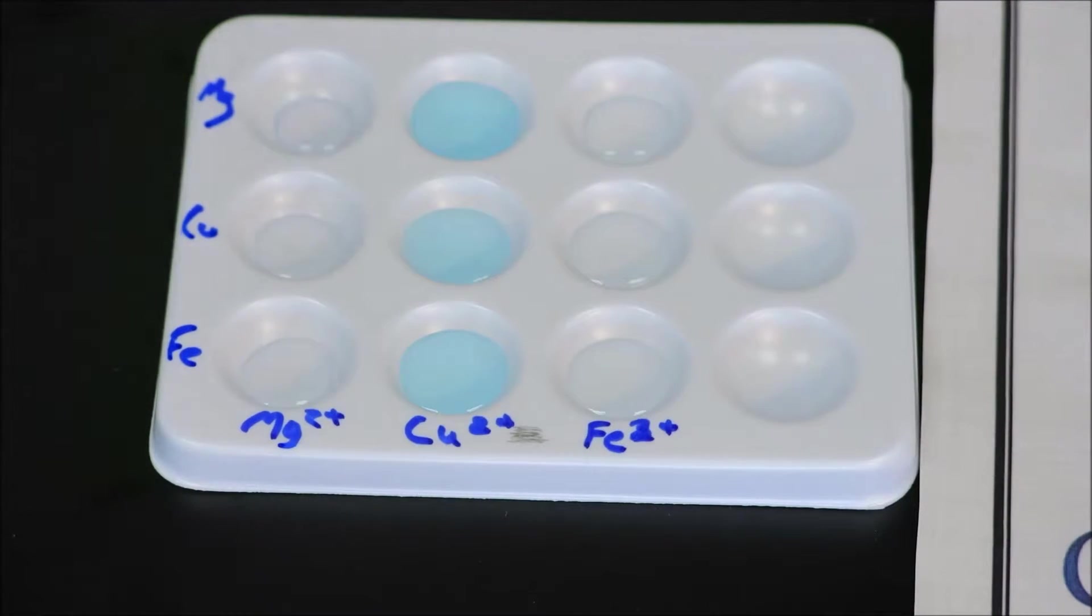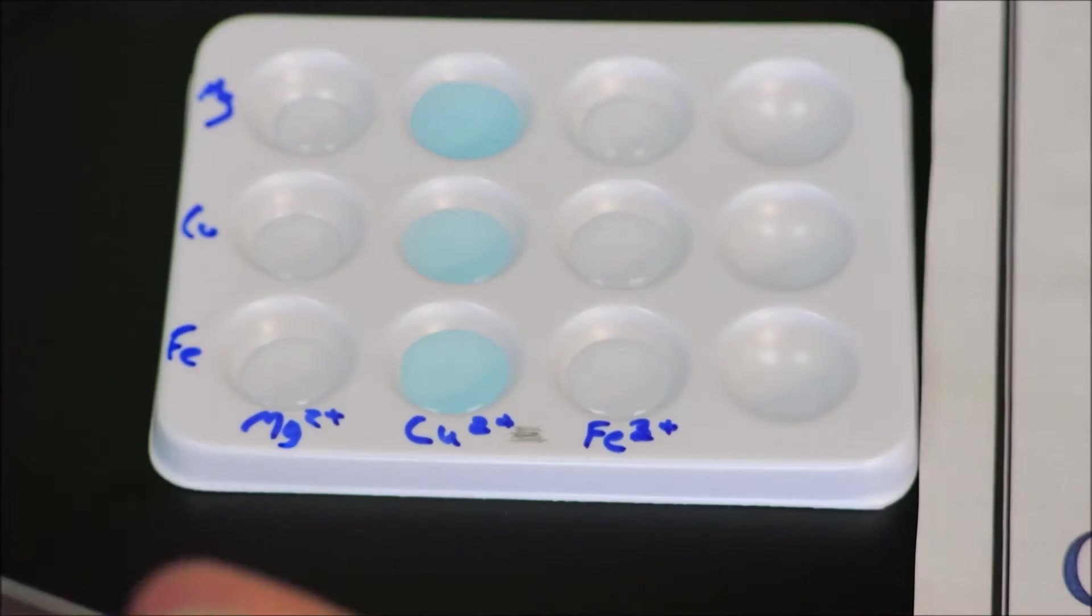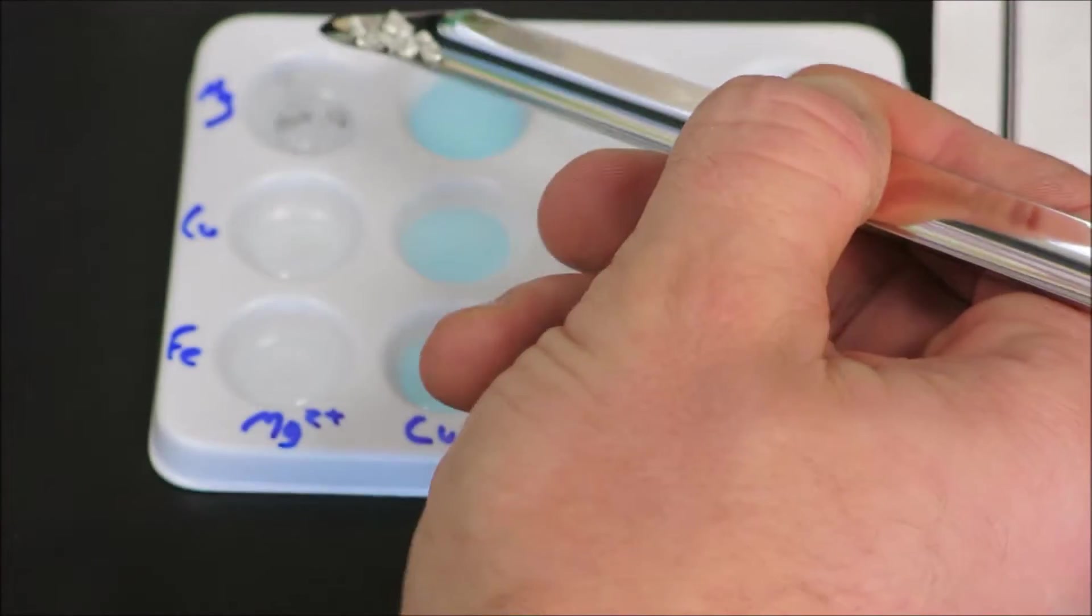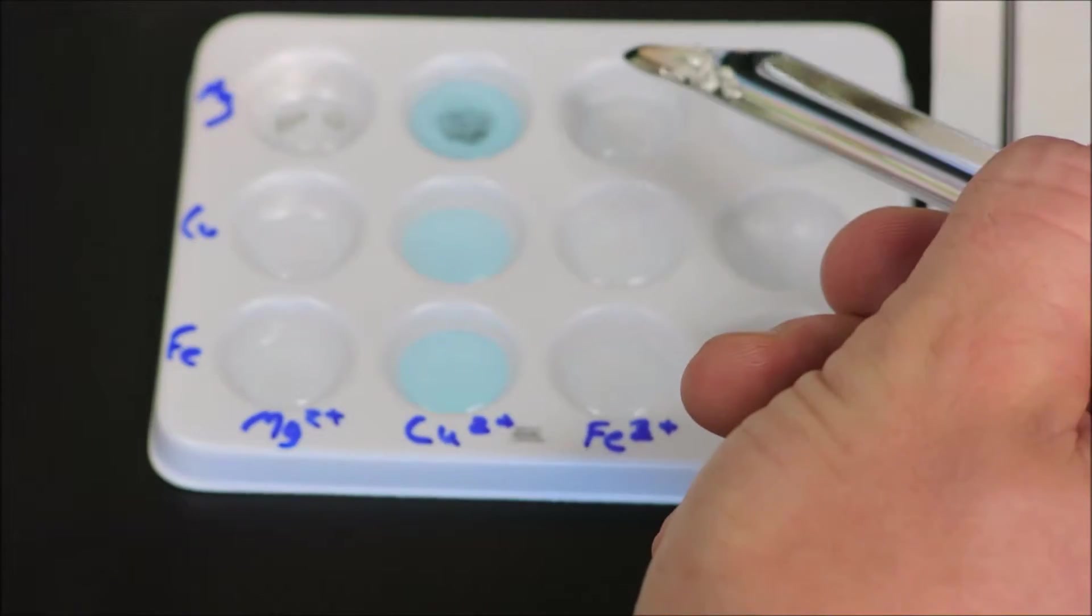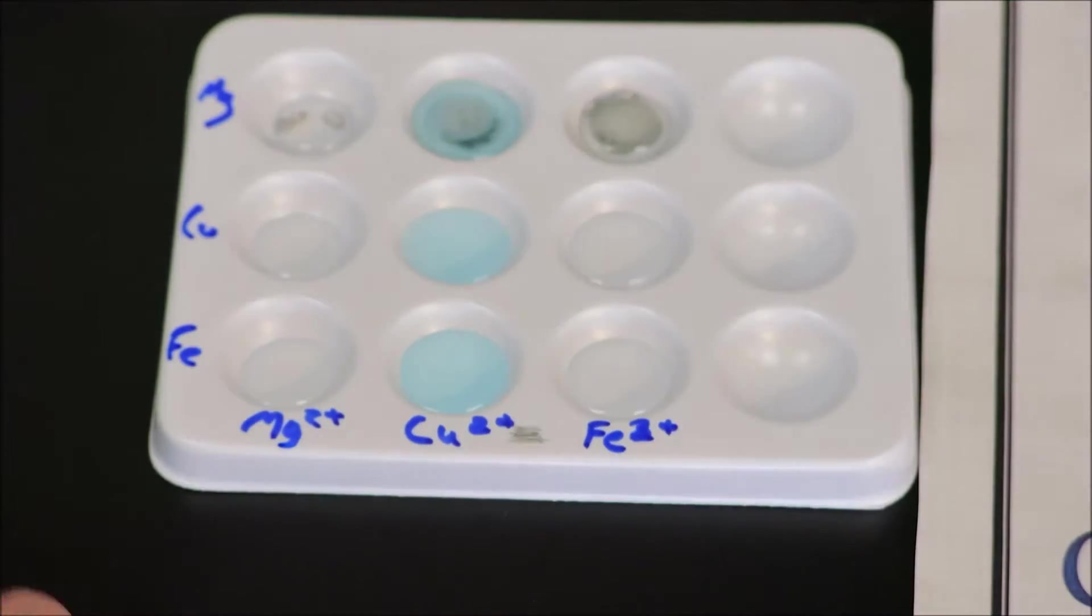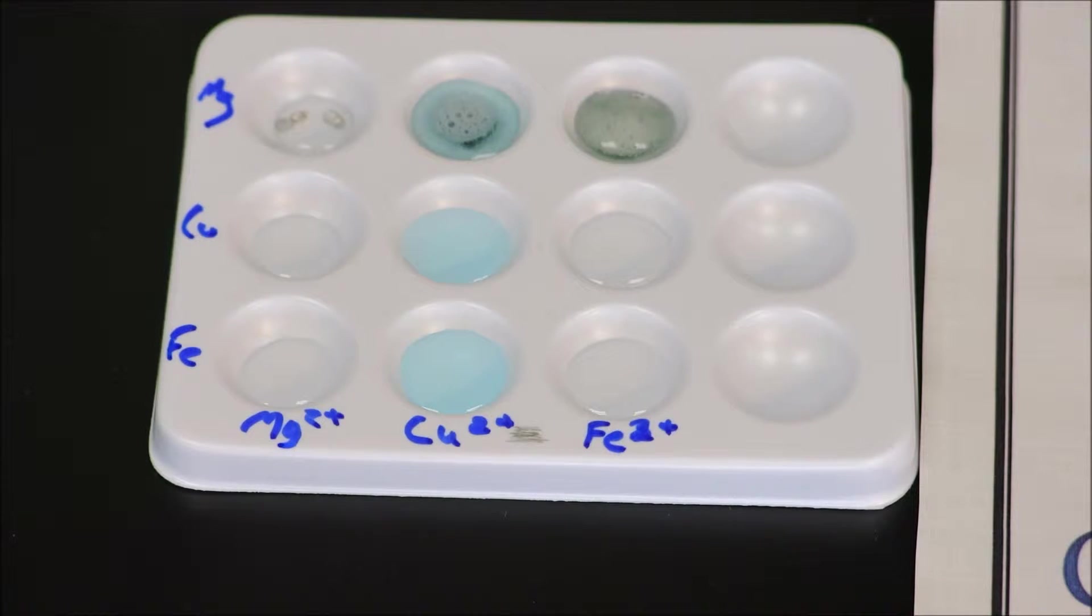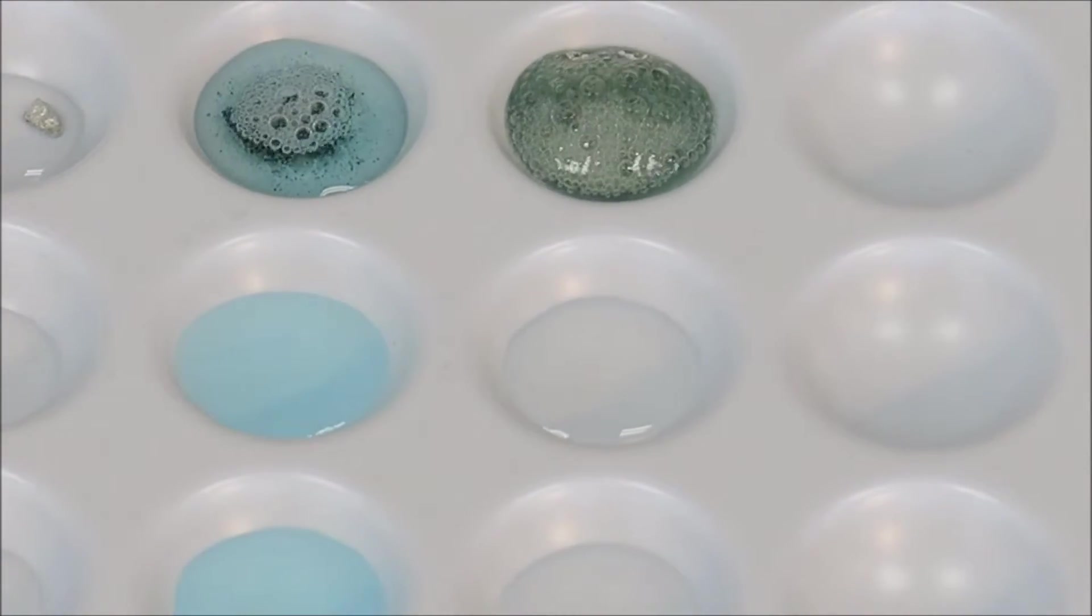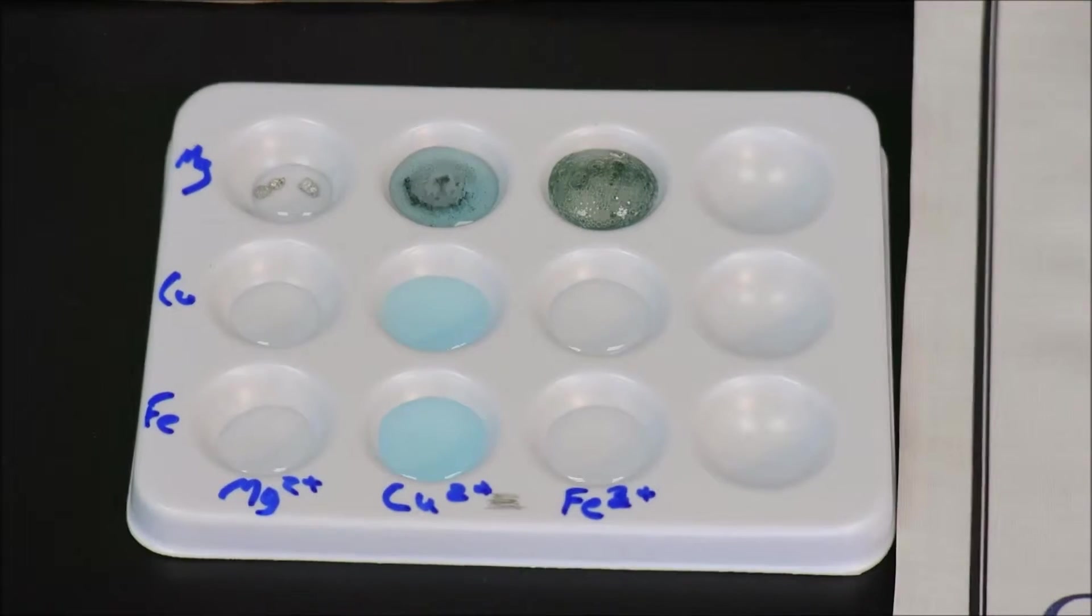So our first row will be magnesium metal. We'll take a small amount of magnesium and place it in each one of those wells. And I think right away, we can see vigorous reactions happening in both the copper solution and the iron two-plus solution. But no reaction at all in the magnesium ion solution.